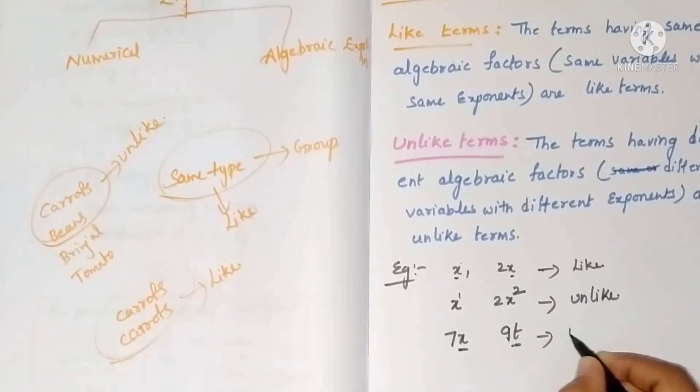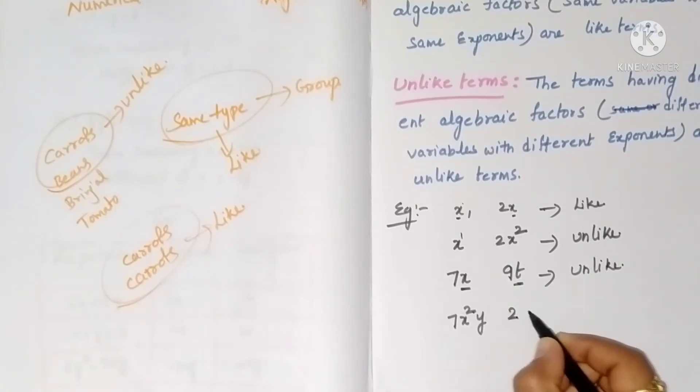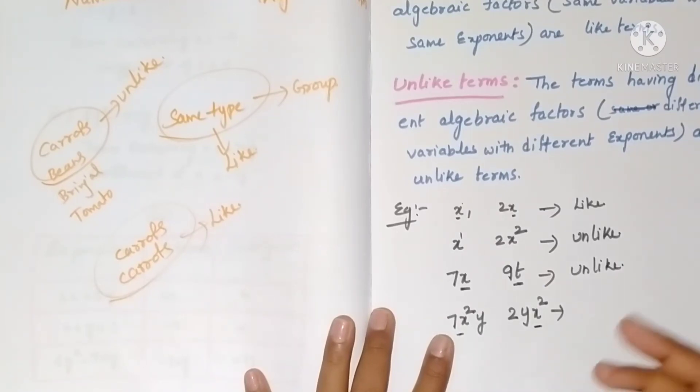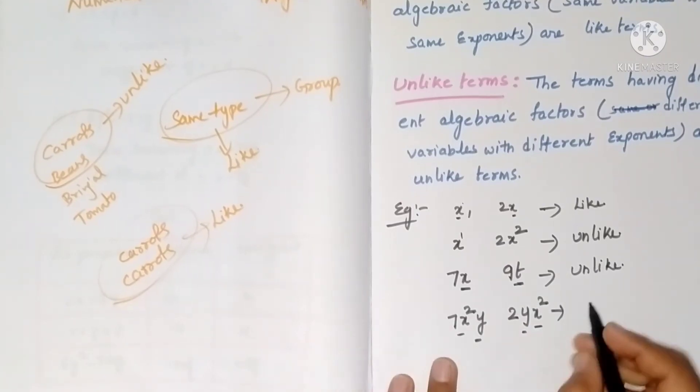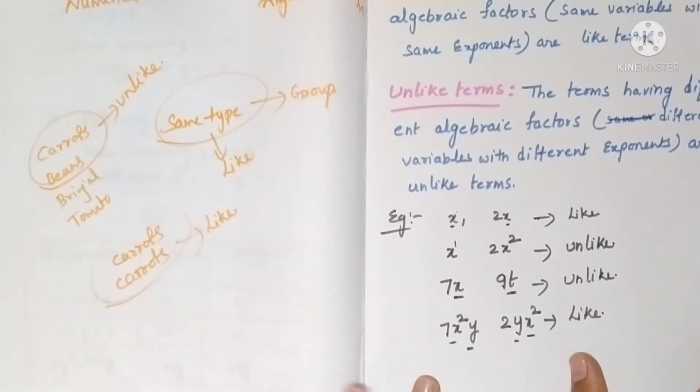Now see 7x²y and 2yx². Numbers don't matter; observe the letters. Here x² is there and here also x² is there, and y is there and here also y is there, so they are like terms.